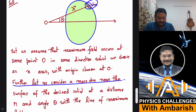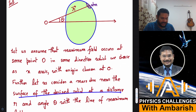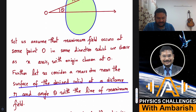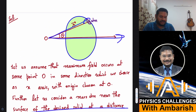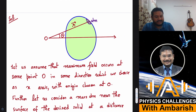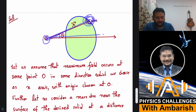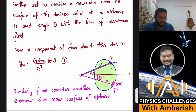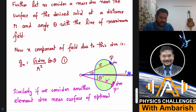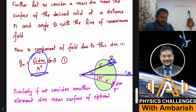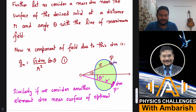Consider a mass element dm near the surface of the desired solid at distance r and angle θ with the line of maximum field. The x-component of the gravitational field contribution at point O due to this dm is G·dm/r²·cosθ. This is the x-component of the field due to this element — straightforward so far.